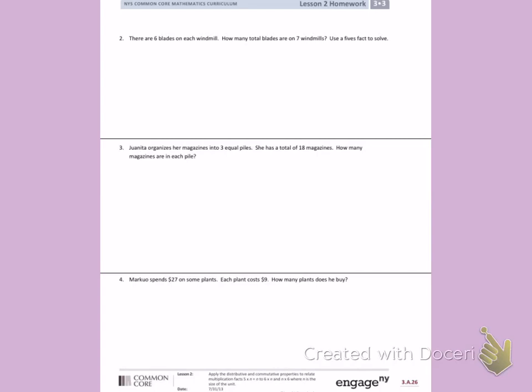This is similar to number three on your classwork. We need to use a fives fact to solve. The problem I'm solving involves six blades on each windmill, and there are seven total windmills. So I'm trying to multiply seven times six. I'm going to break apart seven into a fives fact, five times six, and then two more. Five plus two will give me my total of seven.